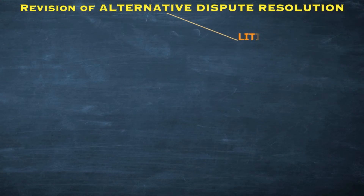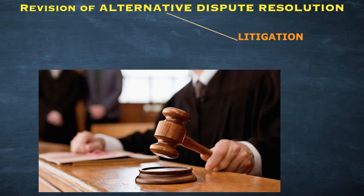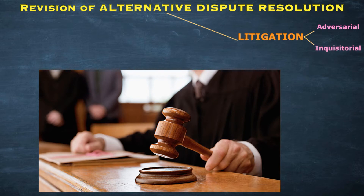Primarily we have litigation, though it is not part of this unit as alternative dispute resolution, because it is the core adjudication process. We haven't studied litigation directly, but under this topic we studied the adversarial system and the inquisitorial system. Both systems of adjudication are part of litigation, not ADR, but since they were in this chapter I included them under the heading of litigation.